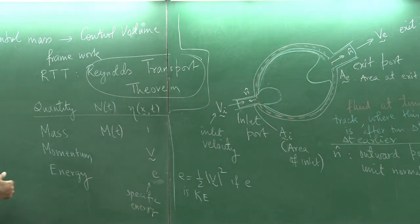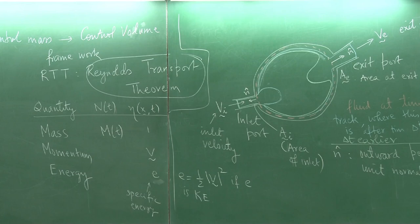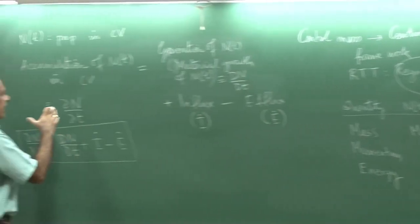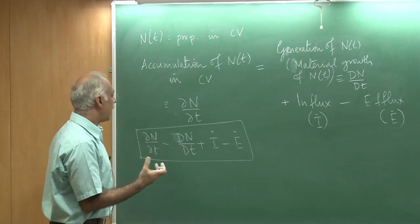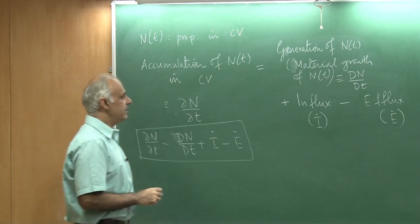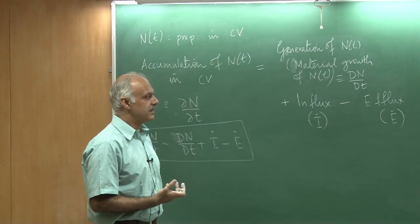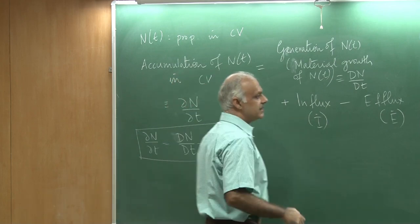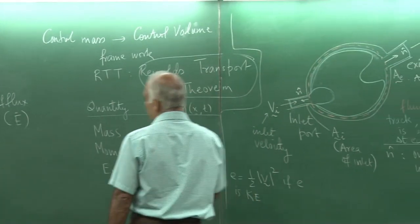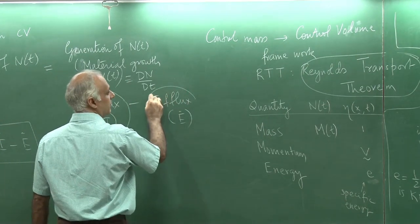It is the same set of fluid particles, but that is too complicated to track. Therefore I am going to restrict myself to what is happening along this red dotted control volume. At time t, if I look at the total property inside my control volume, how that changes is del N / del t. This could be something growing inside — maybe a chemical reaction producing some material. The influx corresponds to the green region and the efflux corresponds to the blue region.